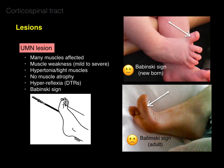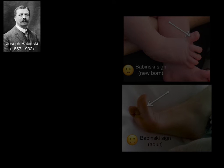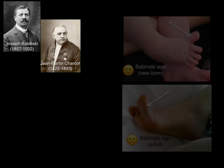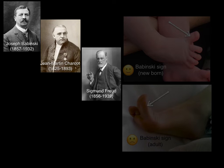The Babinski sign is named after Joseph Babinski, a Polish but French-trained neurologist and the favorite student of Jean-Martin Charcot, a very famous neurologist known for hypnosis and describing hysteria in psychiatry. Charcot-Marie-Tooth disease and Tourette syndrome are named after him. Charcot worked alongside Sigmund Freud, known for the id, ego, and superego.